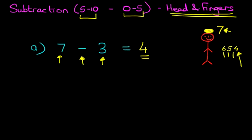That is the answer: 7 minus 3 equals 4. And we've done that using the head and fingers method. So if you're asked a question and you don't have any paper to work with, you can use the head and fingers method to answer the question. Okay, we're now going to move on to our second example.